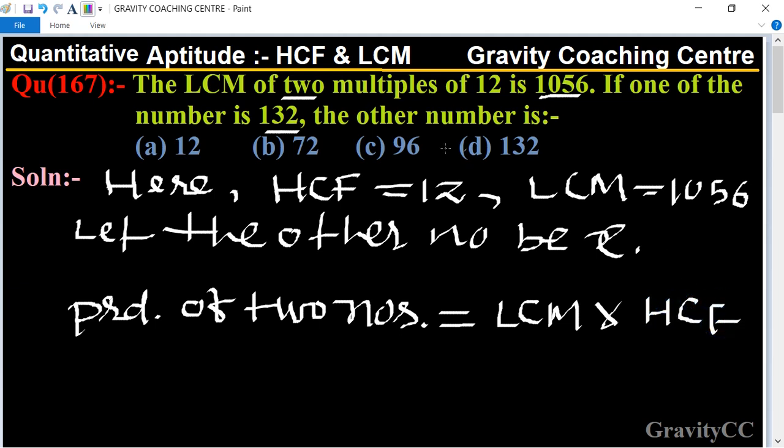The two numbers are 132 and x. So 132 times x equals LCM times HCF, which is 1056 times 12.